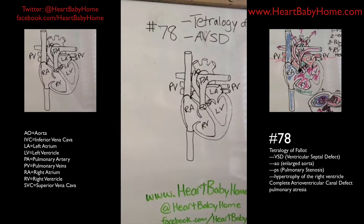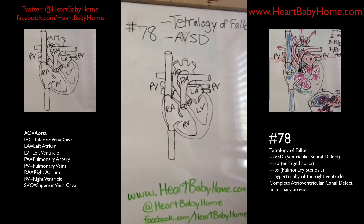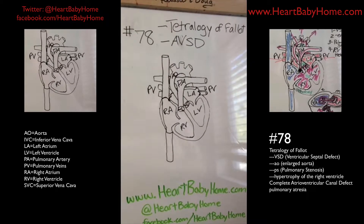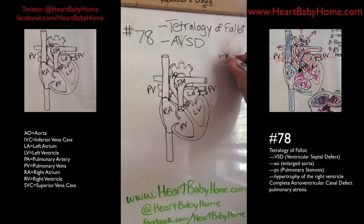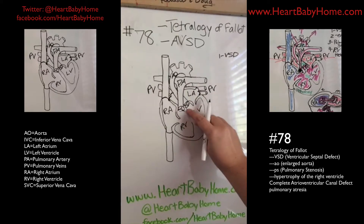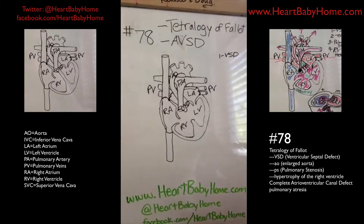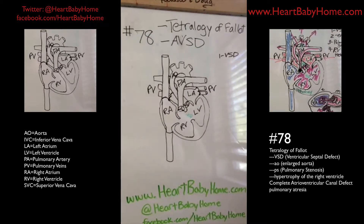Tetralogy of Fallot has four different defects in one. First, we have a large VSD — a ventricular septal defect — which is a hole between the two ventricle chambers of the heart, and this one is fairly large.